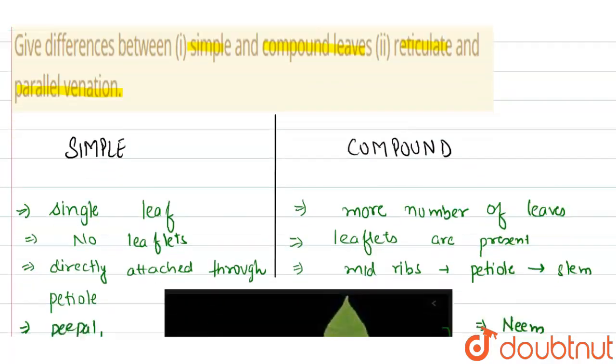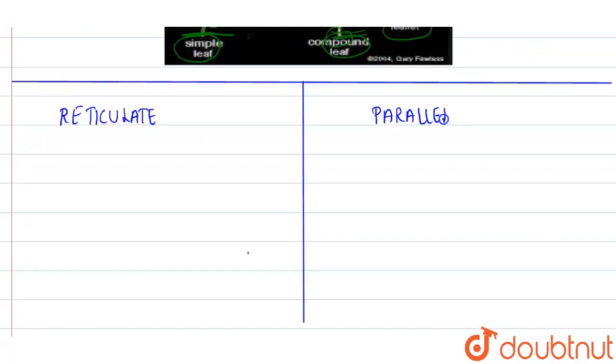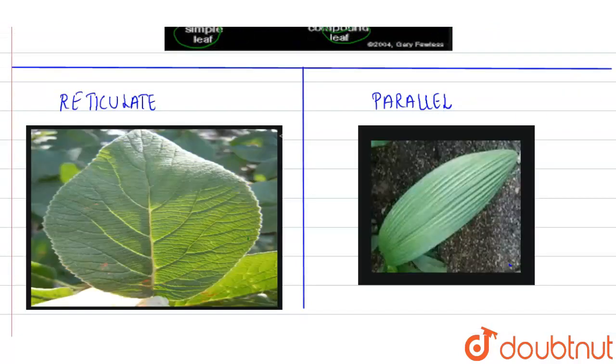Now let's come to our second part — the difference between reticulate venation and parallel venation. Before discussing, let's have a look at the diagram — this is the image of a leaf.